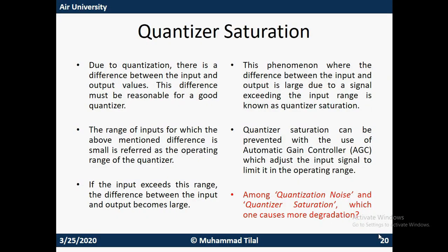The first thing we are going to study about the quantizer is quantizer saturation. Generally, when we talk about the quantizer, there is some difference between the input and output value, which is basically the rounding error, again referred to as the quantizer noise. Now, if the range for which this difference between the original value and the rounded-off value is small, we call this range of input the active range of the quantizer.